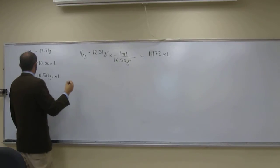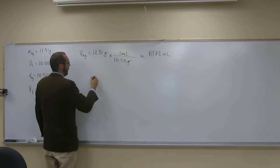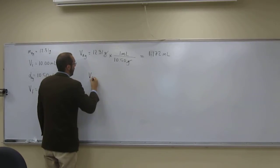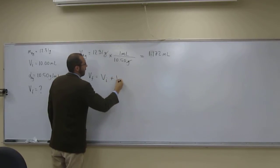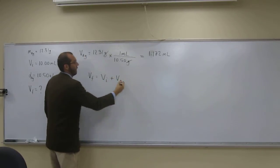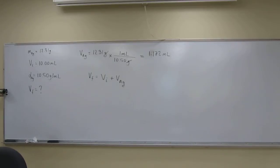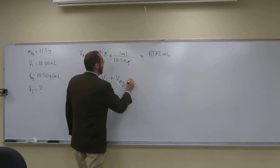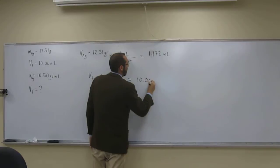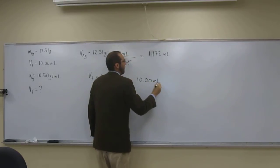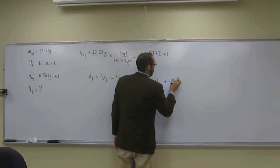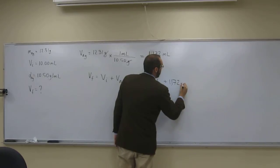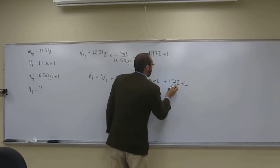So the final volume, well, the volume final, that's going to be the initial volume plus the volume of the silver, does that make sense? So the initial volume is 10.00 mils, volume of the silver is 1.172 mils.